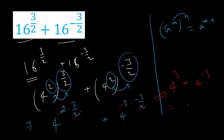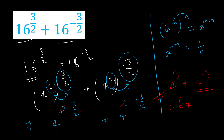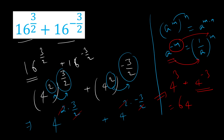So 4 raised to the power 3 is 64. For 4 raised to the power minus 3, we use the property that a raised to the power minus m is nothing but 1 by a raised to the power m. This means to convert a negative power to a positive one, we take the reciprocal of the base. So 4 becomes 1 by 4, giving us 64 plus 1 by 4 raised to the power 3.